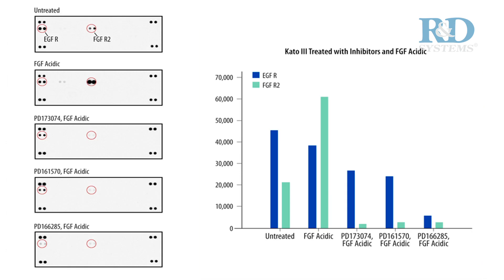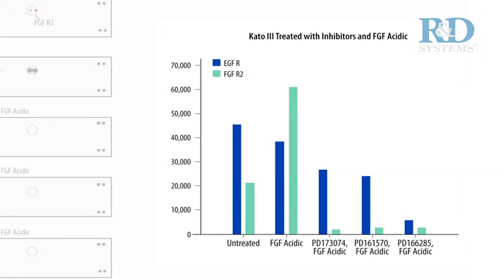Here, data is shown for Kato3 cells known to overexpress the RTK FGFR2.